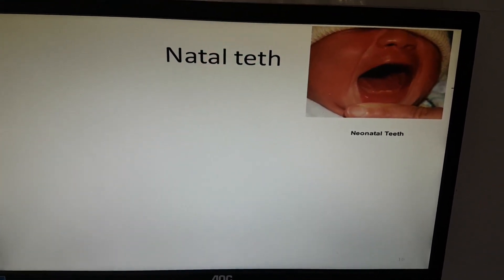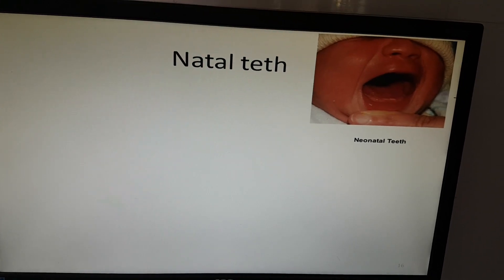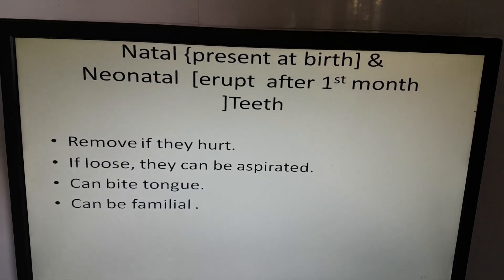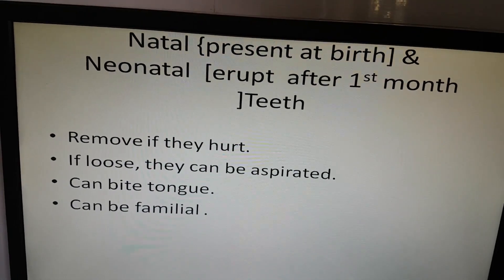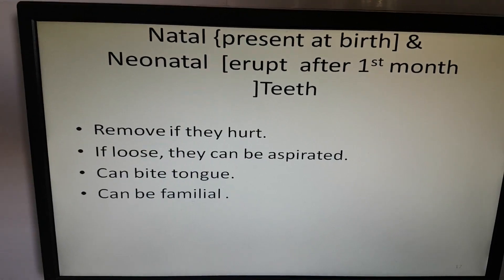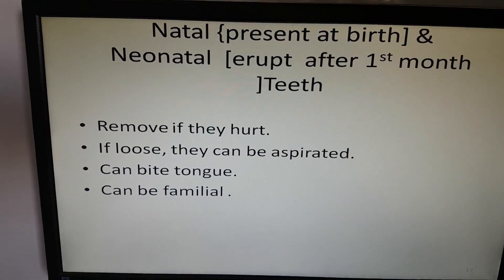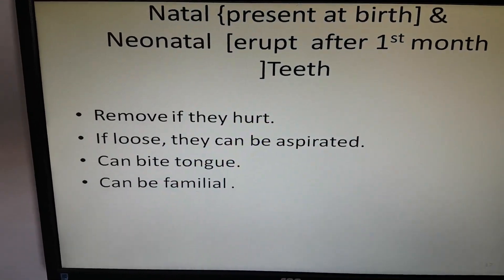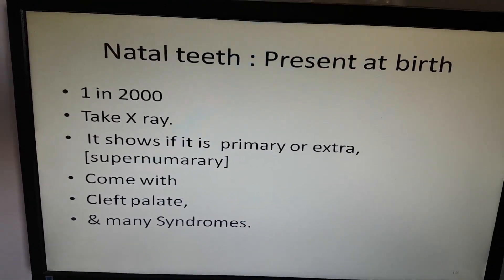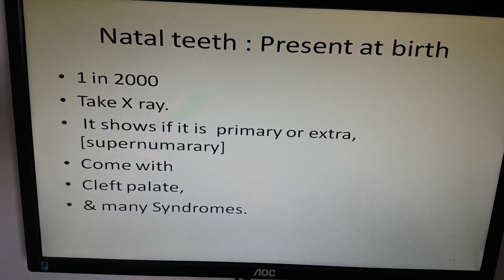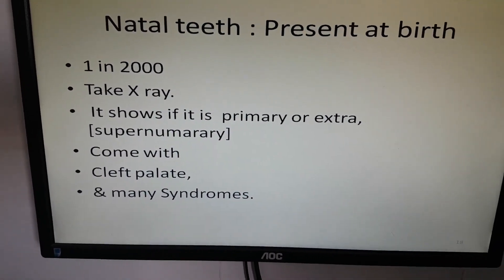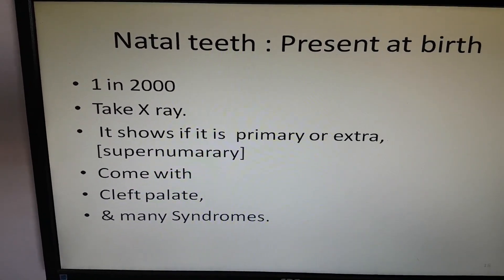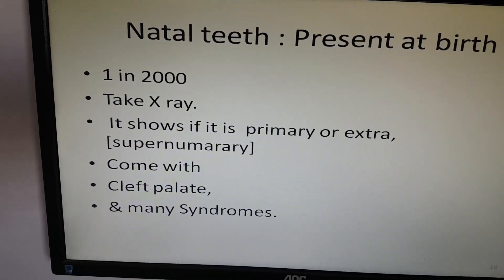Natal teeth — if they are injurious or harmful, remove them. Natal teeth are present at birth; neonatal teeth erupt after the first month. If loose, they can be aspirated. They can bite the tongue. This can be familial. Incidence is 1 in 2000. Take an X-ray — it shows if it is a primary tooth or supernumerary. They come with cleft palate and many syndromes.